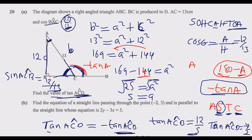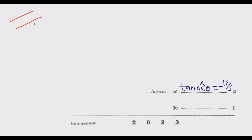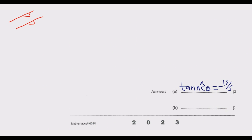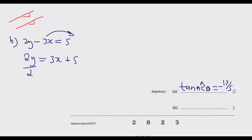Question B: Find the equation of a straight line passing through the point negative 2, 3, and parallel to the straight line whose equation is 2y minus 3x equals 5. When two lines are parallel, they have the same gradient. So we need to find the gradient of the given line by making y the subject. Starting with 2y minus 3x equals 5: rearranging gives 2y equals 3x plus 5, then dividing by 2 gives y equals 3 over 2 times x plus 5 over 2.